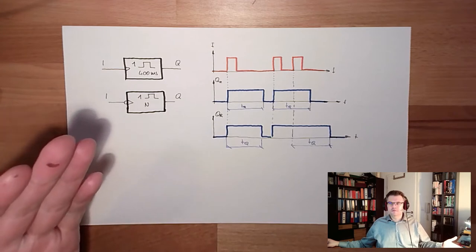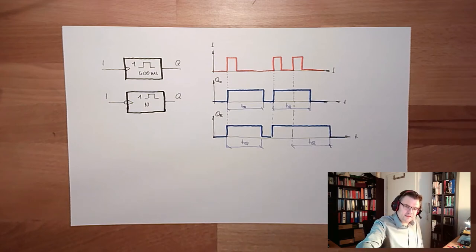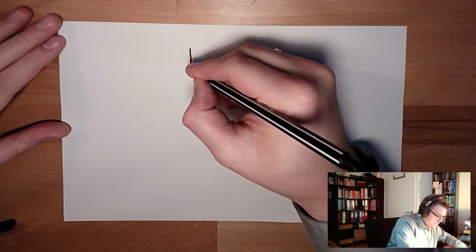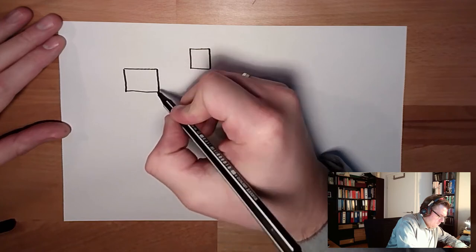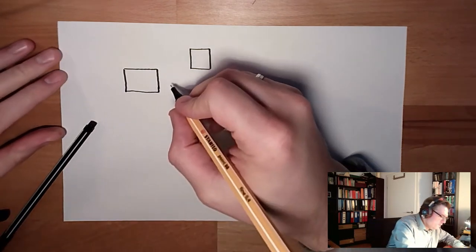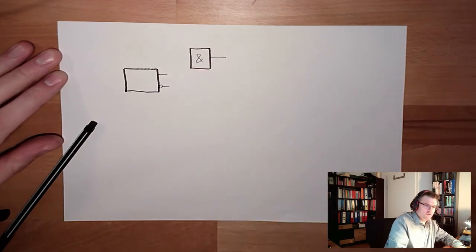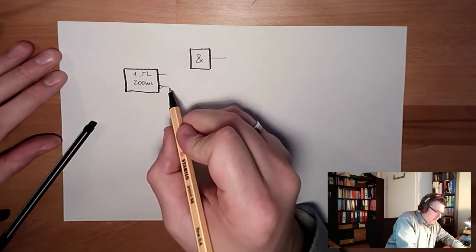What to do with such things? Usually I want to delay some signals. I'll show you how to build a delay circuit with them. We could use an AND gate with this monostable element — 200 milliseconds — and then use its inverted output.